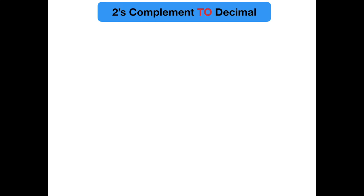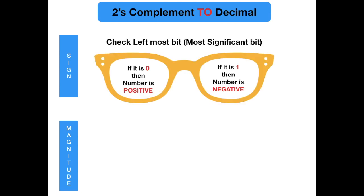Given a number in 2's complement representation, we need to find the decimal equivalent. For that, we need to find two pieces of information: the sign and the magnitude. To decide the sign, we check the leftmost bit or the most significant bit. If it is 0, then the number is positive, and if it is 1, then the number is negative.